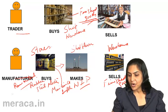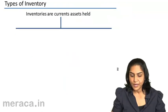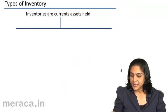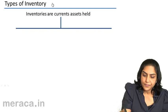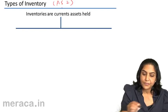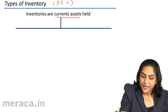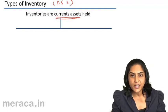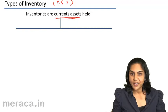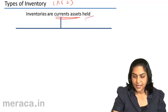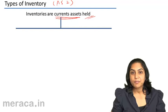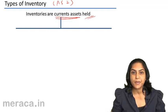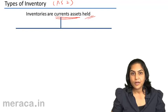Let us now understand how Accounting Standard 2 has defined inventories. AS2 says that inventories are current assets — current assets being assets which are expected to be converted to cash within a year. Inventories are current assets which are held. The title of possession of the inventories should be with the business.